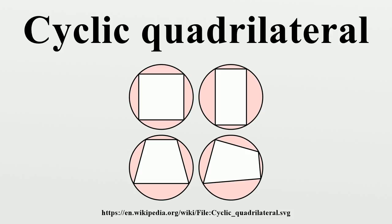All triangles have a circumcircle, but not all quadrilaterals do. An example of a quadrilateral that cannot be cyclic is a non-square rhombus. The section on characterizations below states what necessary and sufficient conditions a quadrilateral must satisfy to have a circumcircle.